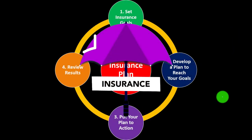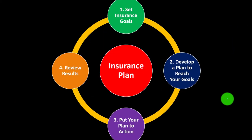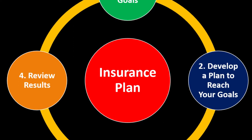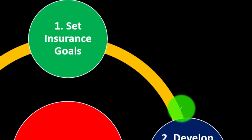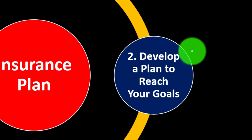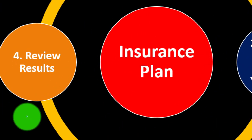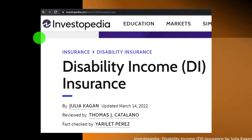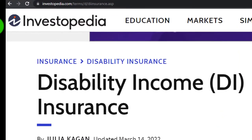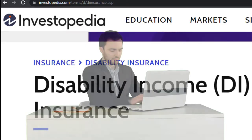Insurance is part of our long-term risk mitigation strategy where we follow the adage of measure twice, cut once — put a formal process in place. Looking something like: set the goals, develop a plan to reach them, put the plan in action, review the results, repeat the process periodically. Most of this information can be found at Investopedia Disability Income DI Insurance, which you can find online.